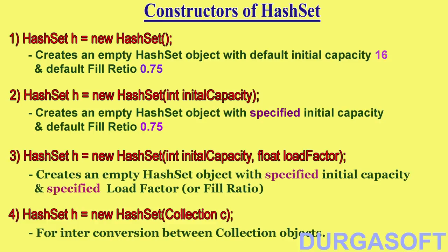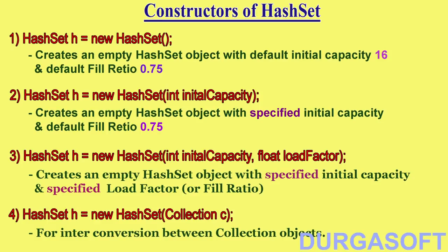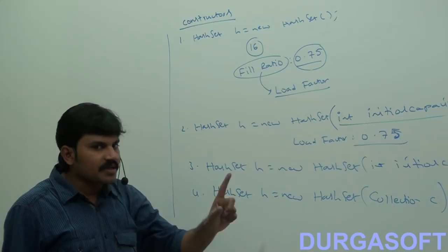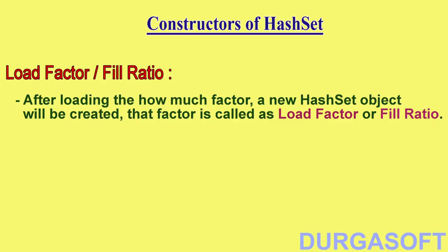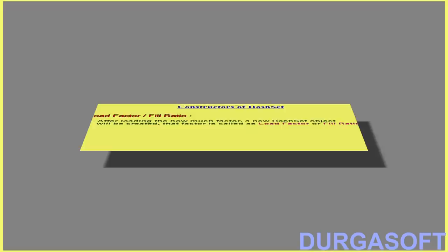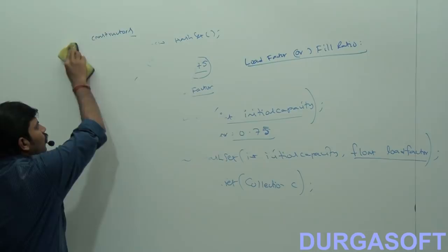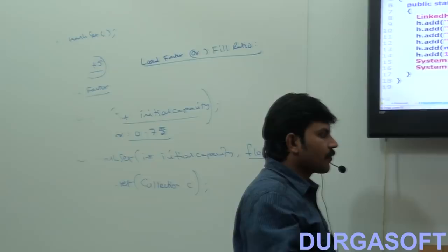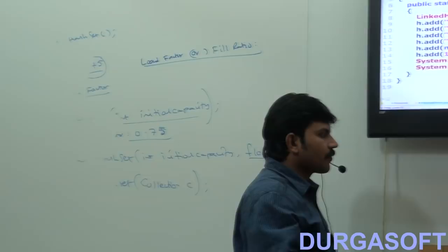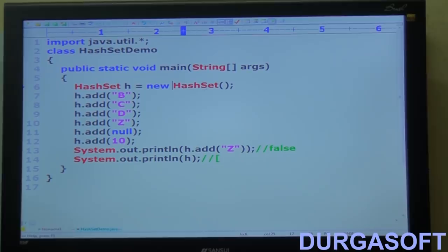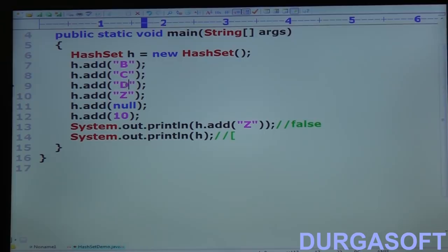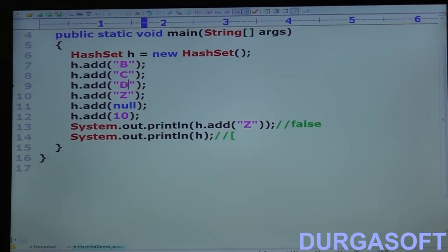Now let me convert this into a programmatic example. I am taking a normal HashSet: h = new HashSet(). Then h.add('B'), h.add('C'), h.add('D'), h.add('Z'), and also adding null and 10 — so six elements total.